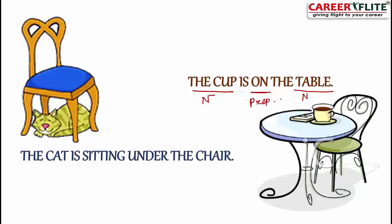In the next sentence: 'The cat is sitting under the chair.' Here, 'cat' is the noun and 'chair' is another word. The word 'under' connects the chair with the cat. That is why 'under' is a preposition here.